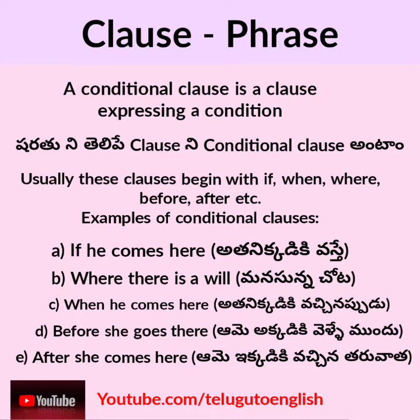Examples of conditional clauses: Example A — 'if he comes here.' Example B — 'where there is a will.' Example C — 'when he comes here.' Example D — 'before she goes there.' Example E — 'after she comes here.'